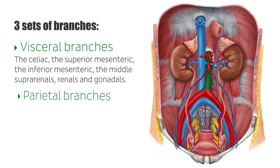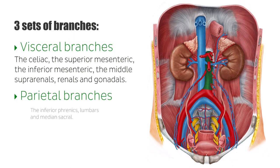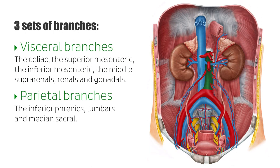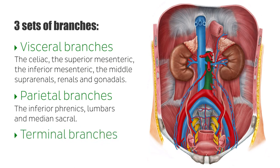The parietal branches — the inferior phrenics, lumbars, and median sacral — which supply the diaphragm and the posterior abdominal walls. And the terminal branches, the common iliacs, which supply the lower extremities, the organs of the pelvis, and the pelvic wall.